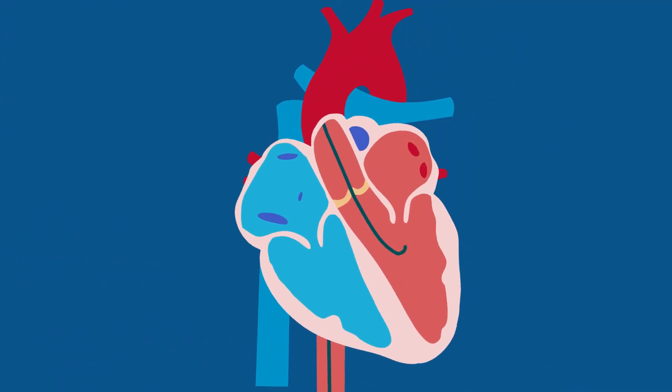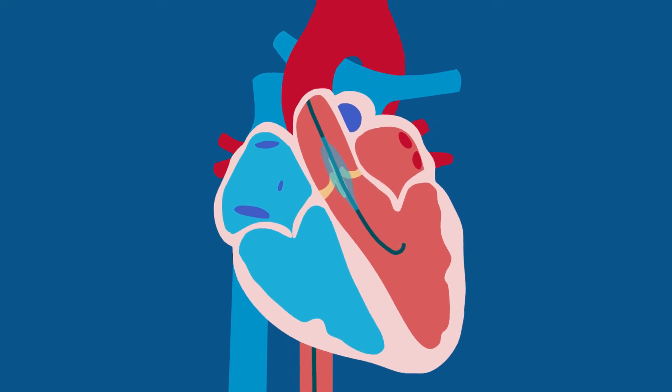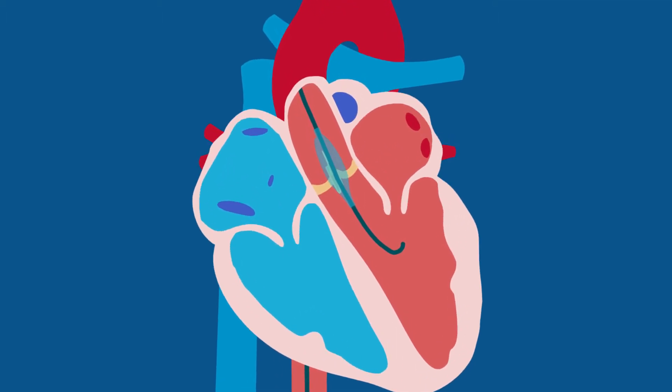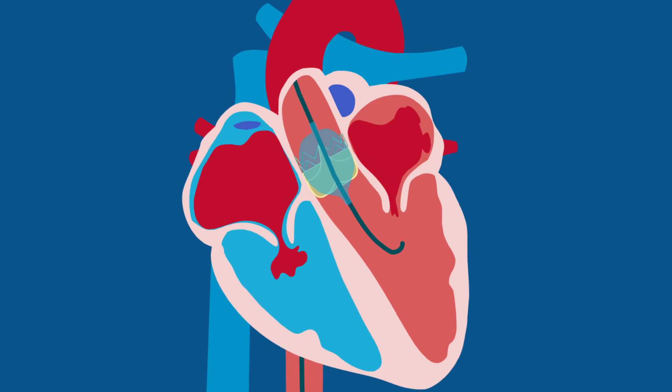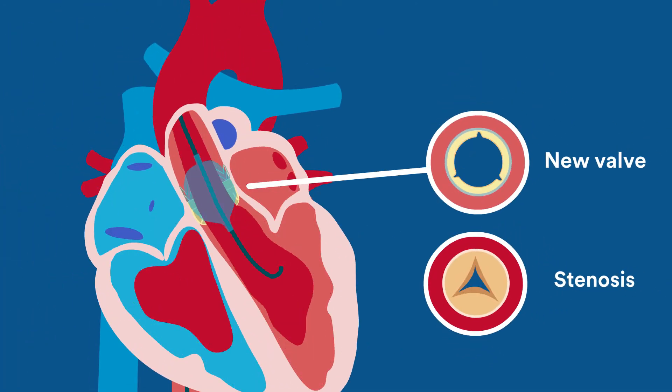Once in the heart, the new artificial valve is placed inside the old faulty aortic valve. The replacement valve then expands and takes over regulation of blood flow through the valve, increasing blood flow from the heart to the body.